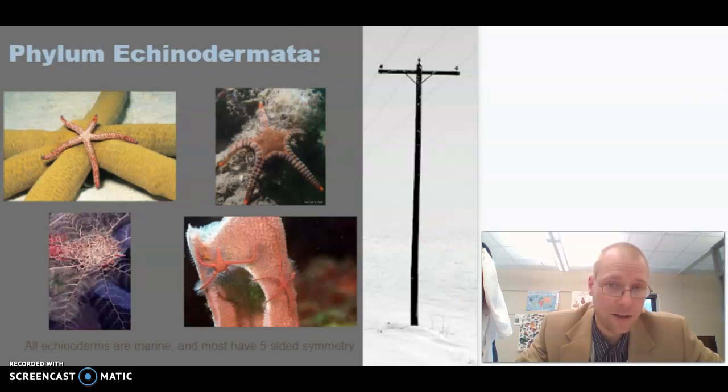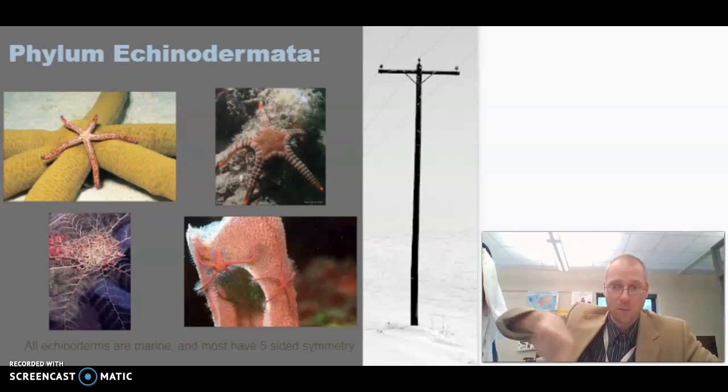Next, we have the echinoderms, echinodermata. Derm, if you'll remember, means skin. Echinoderm literally means spiny skin. It comes from the same root word as what they had in Latin for the hedgehog, that little prickly thing, the little prickly mammal. The echinoderms almost all have radial symmetry. So they have symmetry around the central region.